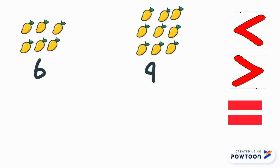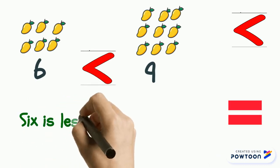In this example, count the mangoes and you will realize that six is smaller than the number nine. So you should use the less than sign to say that six is less than nine.